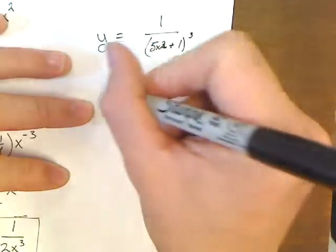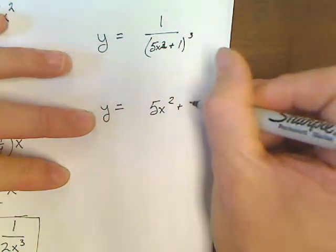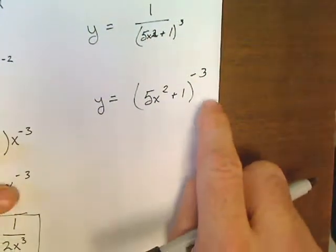All you'd have to do is rewrite it as y equals (5x squared plus 1) to the negative third. And then you can do your chain rule.